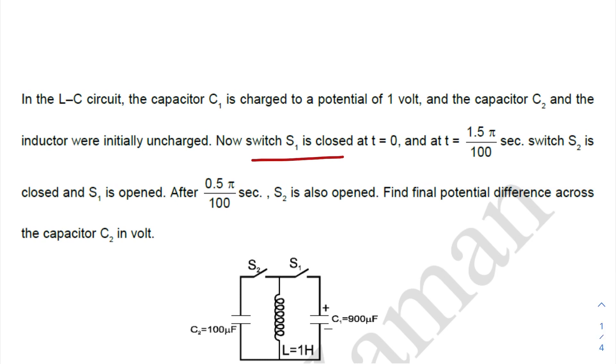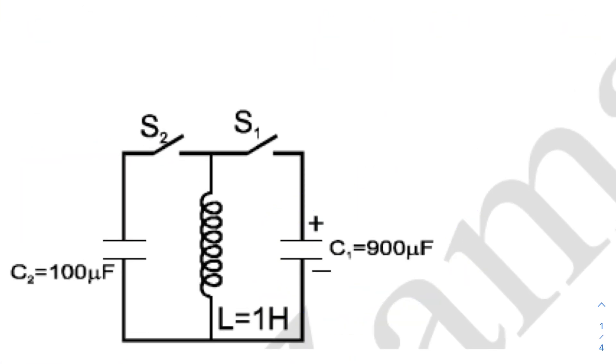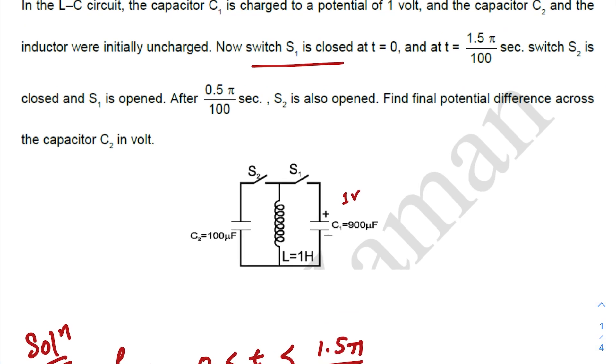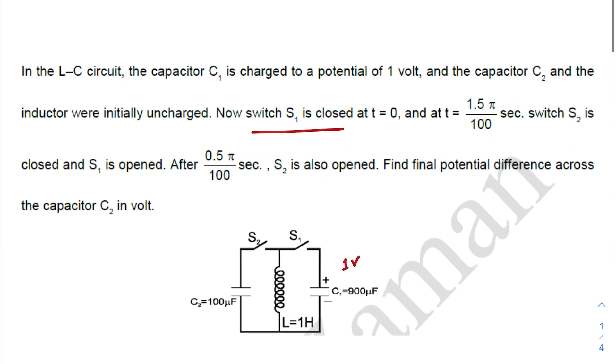In the LC circuit, the capacitor C1 is charged to a potential of one volt. So here we have a capacitor C1 which is charged at a potential of one volt, right? The capacitor C2 and the inductor were initially uncharged. Now the switch S1 is closed at t equals to zero. So first we are turning on S1.